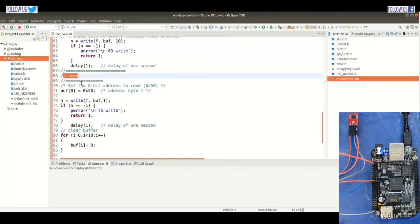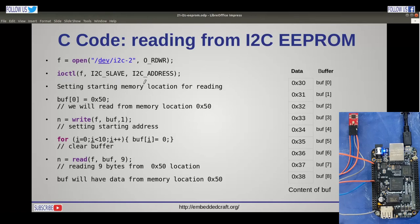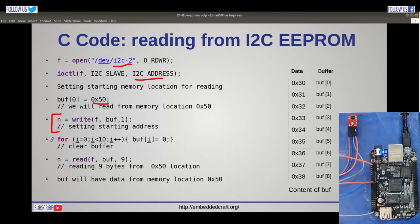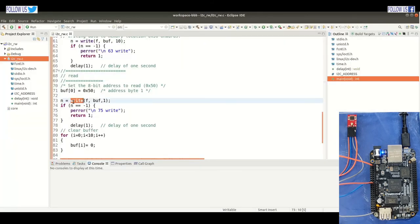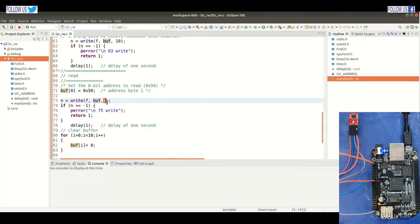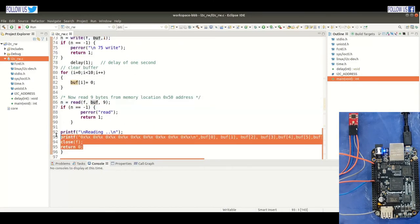Now let us review the read operation. Reading is straightforward. Get a pointer to I2C bus 2, set the slave device address to 0x50. buff[0] will have the device address. Writing buff[0] sets the memory location where we want to read. Here we will make all buffer array entries 0. Finally, when we do read, it will read 9 bytes from memory location 0x50 and data will be stored into the buffer. We write only one byte, then we read the buffer and finally print the buffer.